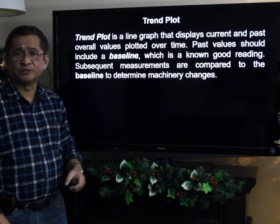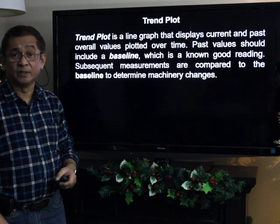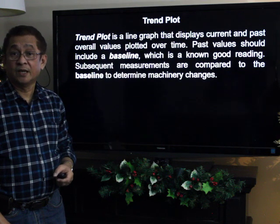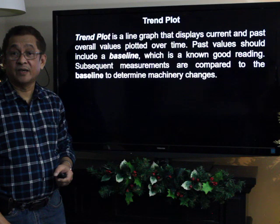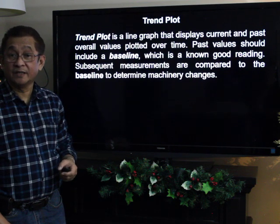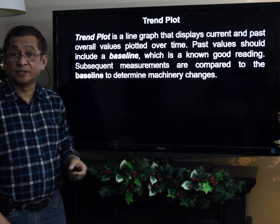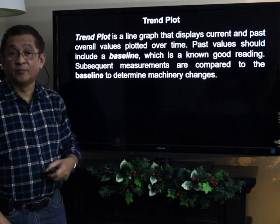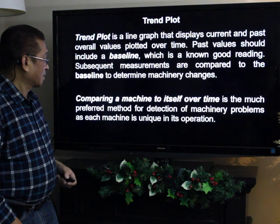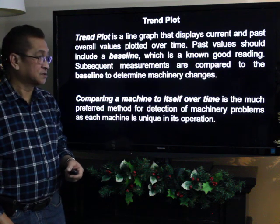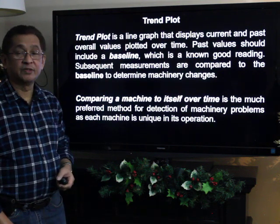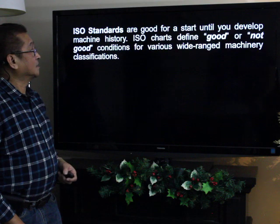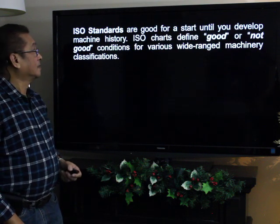The past values should include a baseline — a known good reading — and subsequent measurements are compared to the baseline to determine machinery changes. For example, during rotating equipment installation projects, vibrational readings are taken before turning over the machine to operations. When readings fall within standards, those are recorded as the baseline, allowing us to develop machine history. Comparing a machine to itself over time is the preferred method for detecting machinery problems, as each machine is unique in its operation.